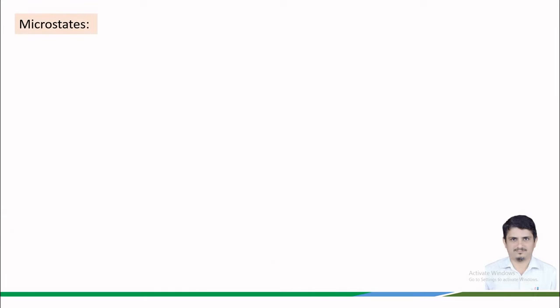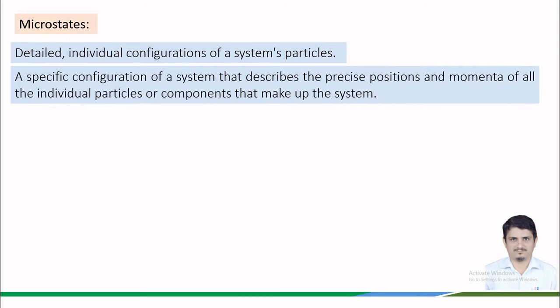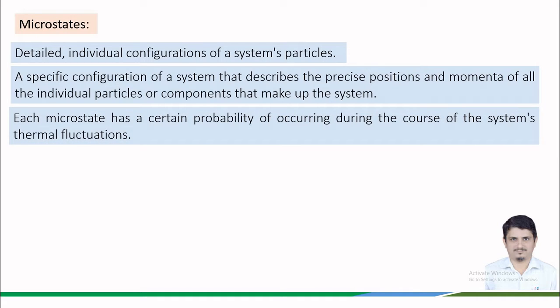Let us first define what is a microstate. Microstates refer to the detailed individual configuration or arrangement of particles at the microscopic level in a system. A microstate is an individual configuration of particles that describe the precise positions and momenta of all the individual particles or components that make up the system. Each microstate has a certain probability of occurring during the course of the system's thermal fluctuations.